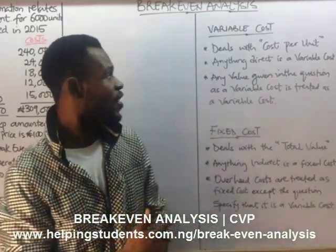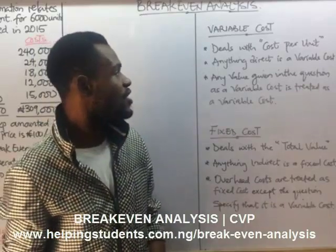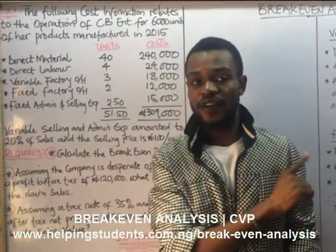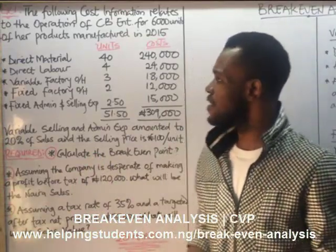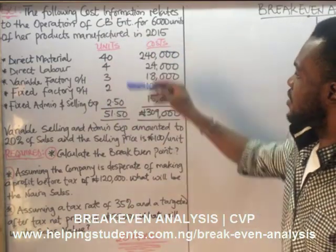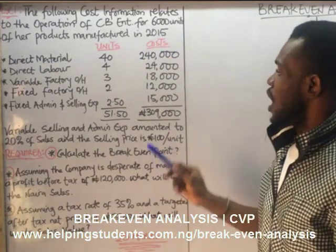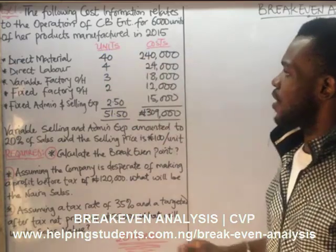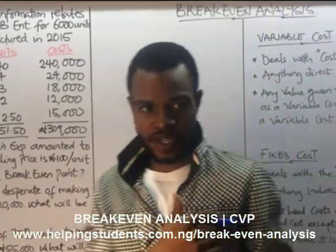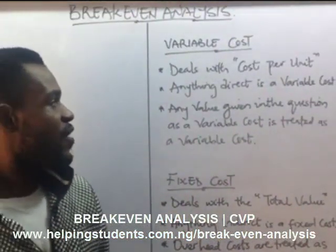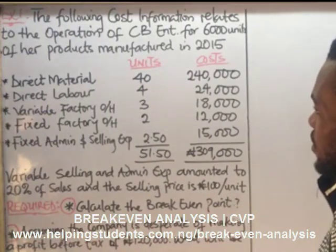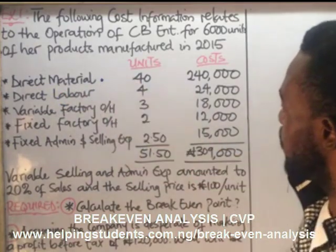To determine the variable cost, the rule says that the variable cost deals with cost per unit. Coming back to the question, we have a unit cost column and a total cost column. So our variable cost will be determined from the unit cost values. Anything direct is a variable cost — so direct material will be a variable cost.